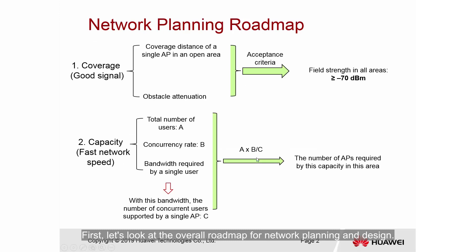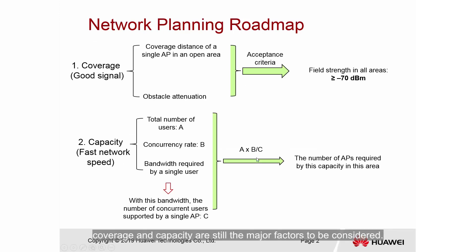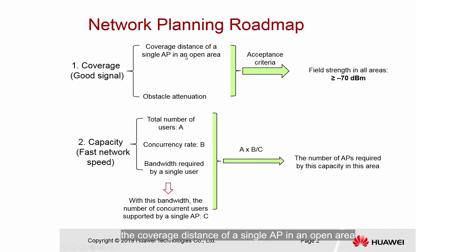First, let's look at the overall roadmap for network planning and design. For outdoor WLAN planning, coverage and capacity are still the major factors to be considered. Coverage is affected by two factors: the coverage distance of a single AP in an open area and the attenuation caused by obstacles.